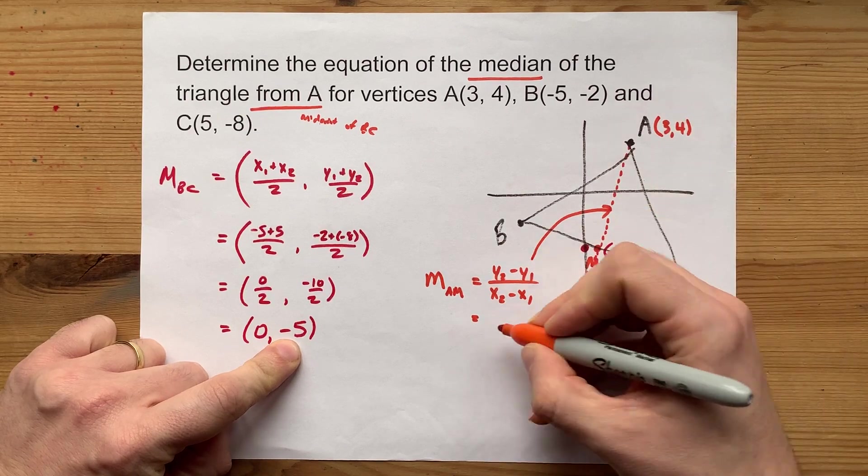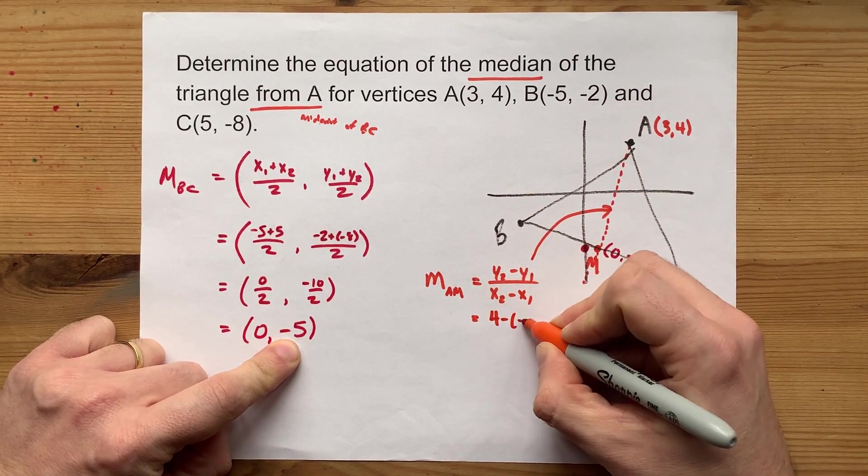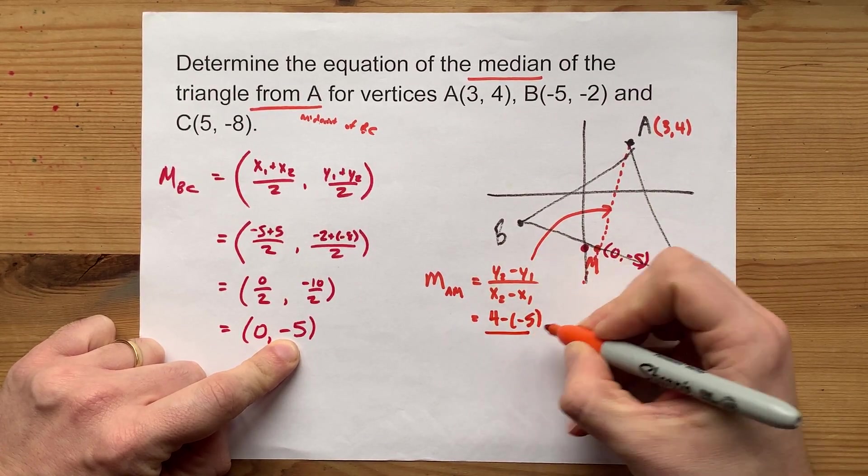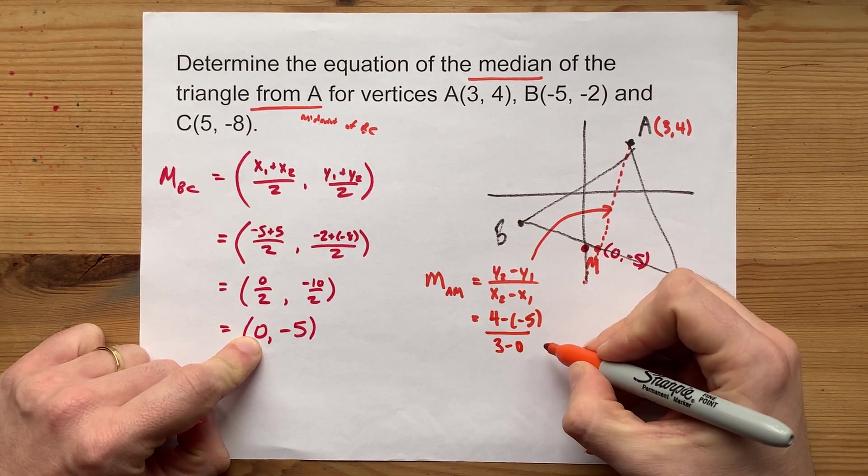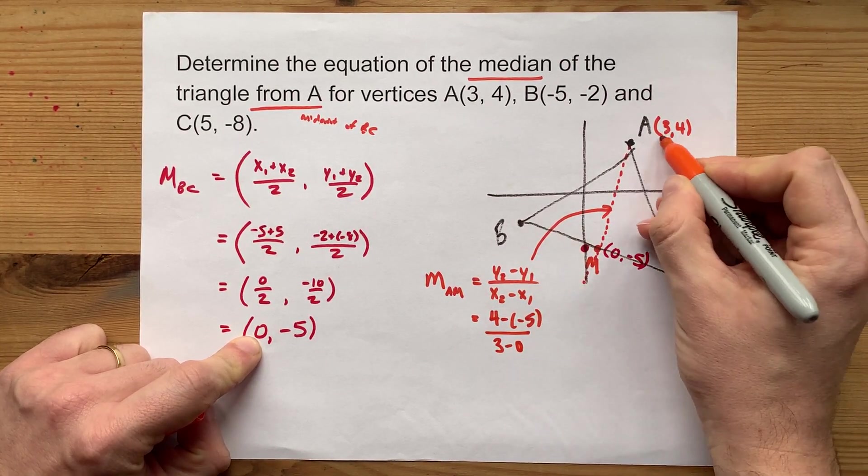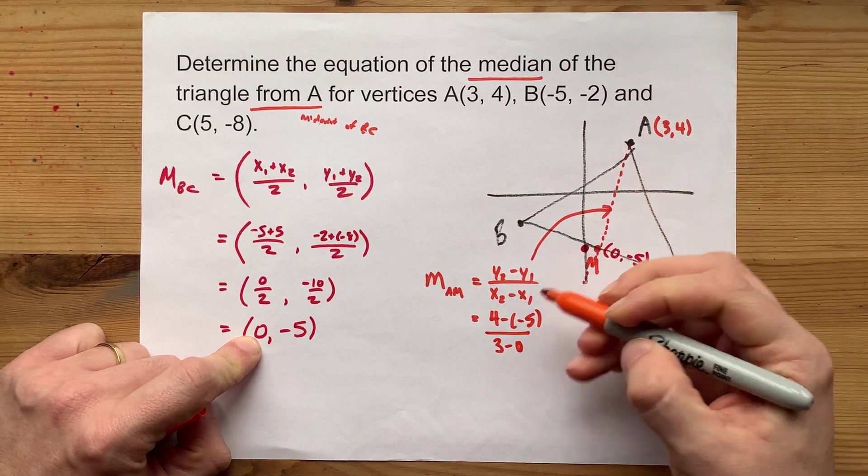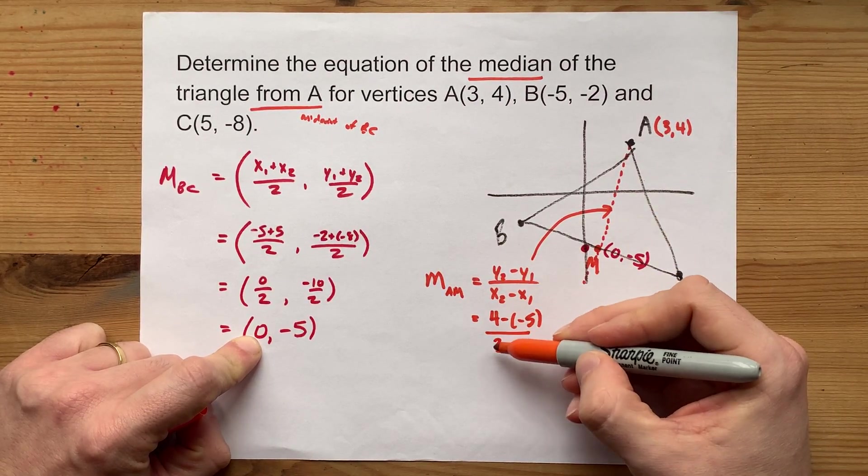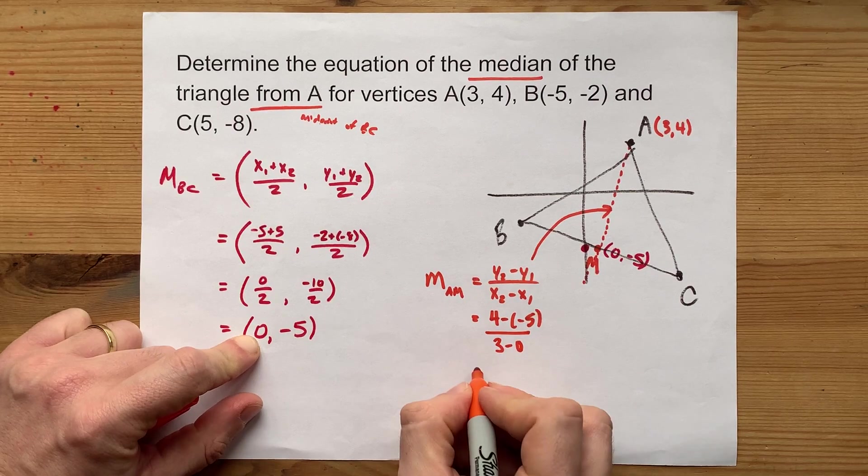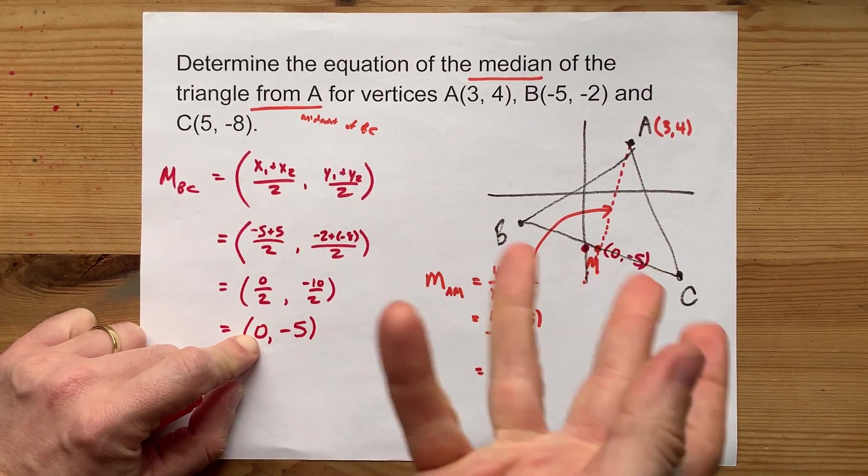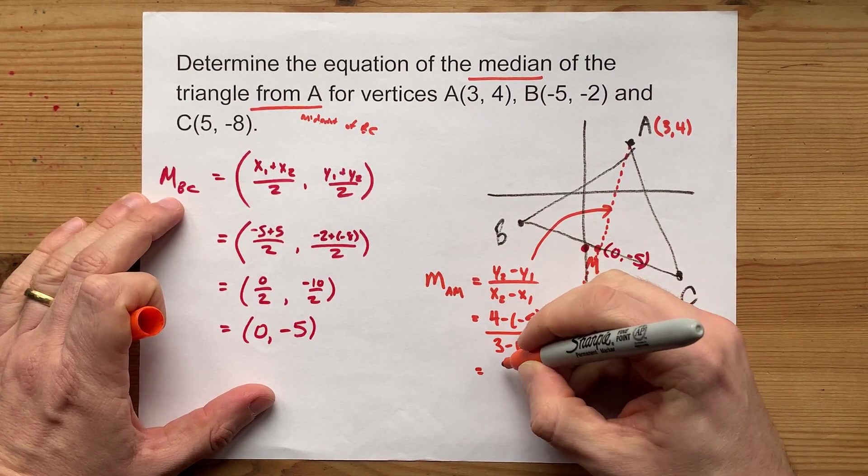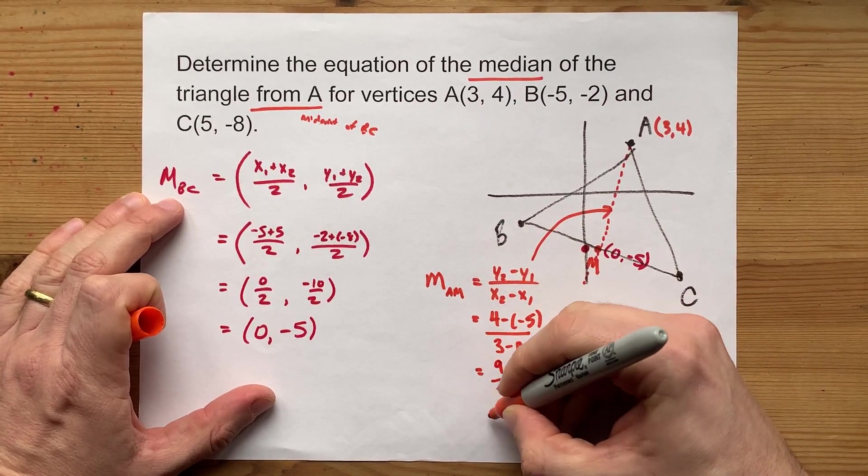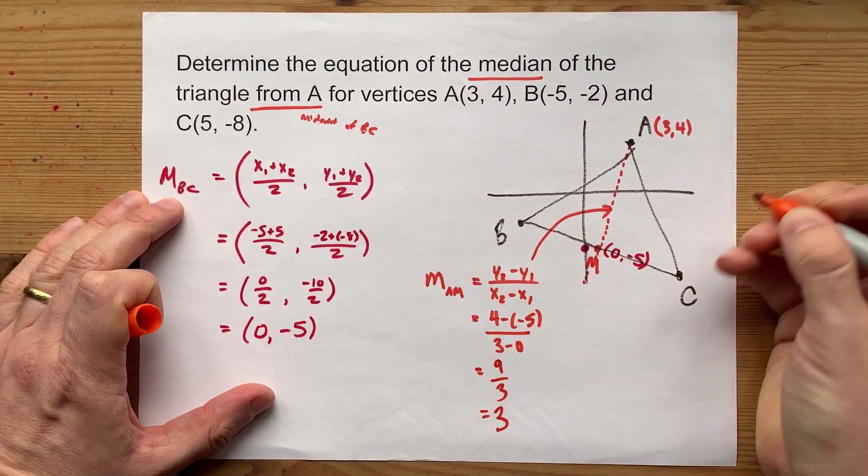y2 minus y1 is 4 minus negative 5. And x2 minus x1 is 3 minus 0. Note that the 4 and the 3 were paired together as a point, and they appear above and below each other in this formula. You don't want to get that twisted around, or you'll be off by a factor of negative 1. Anyways, this gives me 9 over 3, which is another whole number of 3.